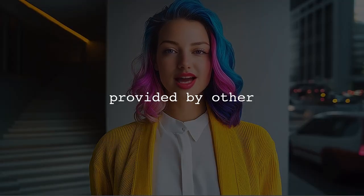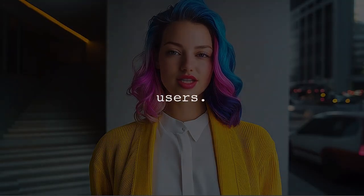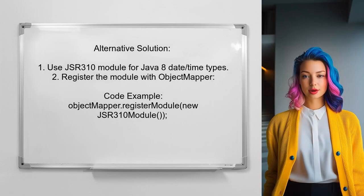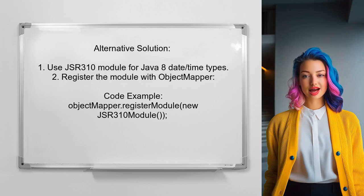Now let's look at the answers provided by other users. An alternative approach suggested by another user is to use the JSR-310 module for handling Java 8 date and time types with Jackson. This involves registering the module with your ObjectMapper to enable proper serialization and deserialization of LocalDateTime.